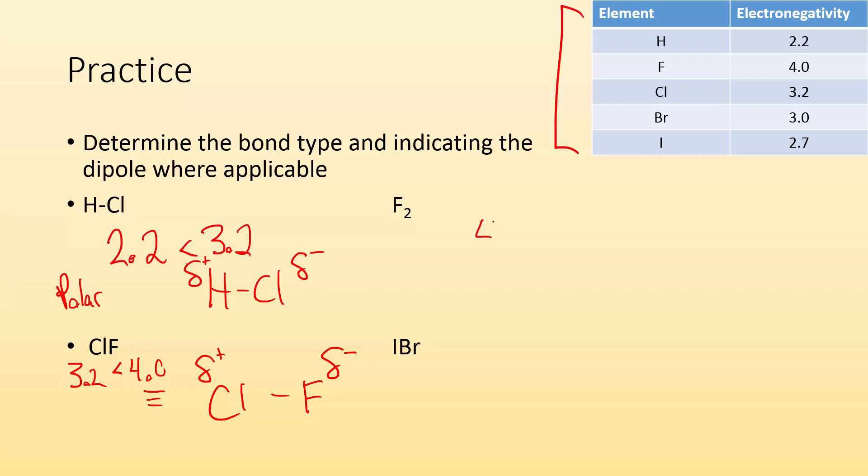F2 - F is 4.0 and so is the other F. These are going to be a nonpolar bond, no dipole because there's no polarity.